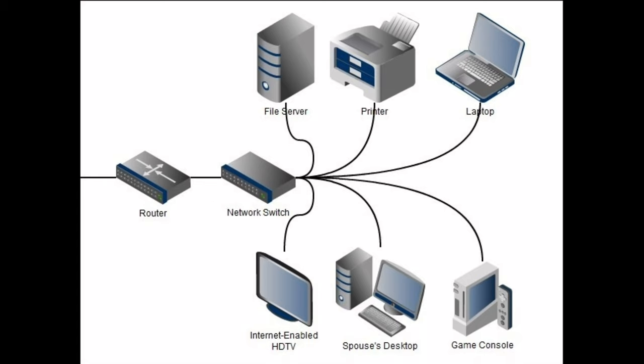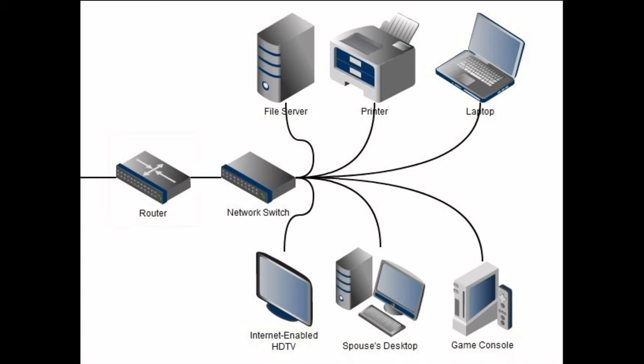Let's consider our body's central nervous system as an example. The brain is like a router which handles all the traffic coming through, and the brain as a router connects through the spine that sends signals throughout the network.